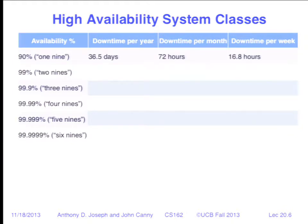Let's look at unavailability: 90% on a yearly basis translates into 36 days of downtime per year — an entire month. That's like your bank having systems down for maintenance roughly two-thirds of Sundays per year, where you can't do anything with your account. It also translates into 72 hours a month and two business days a week. That's a lot.